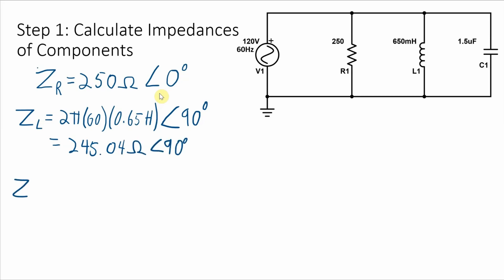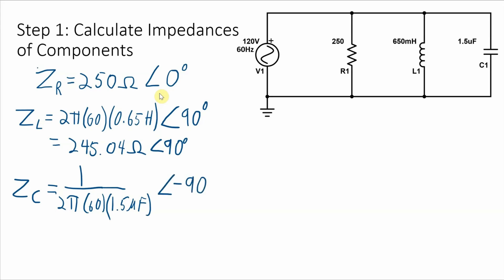Finally, the calculation for the impedance of the capacitor — that one is also frequency dependent. It's 1 over 2π times the frequency times the capacitance of 1.5 microfarads, which gives me the magnitude. The phase angle for capacitance is minus 90 degrees. When I plug those numbers into a calculator, I get 1768.4 ohms with a phase angle of minus 90 degrees.